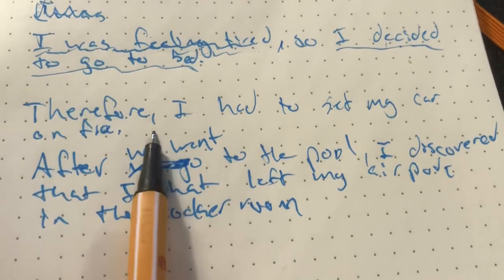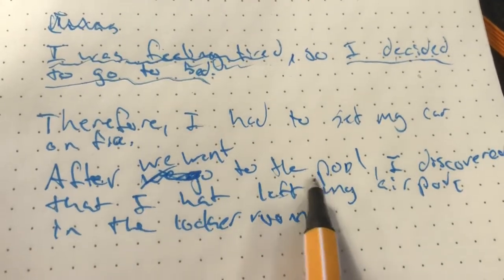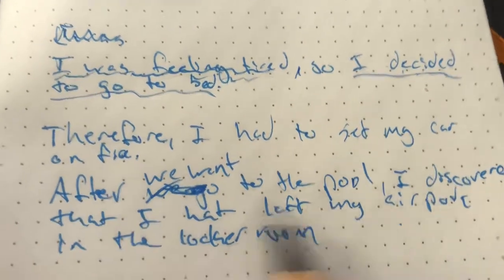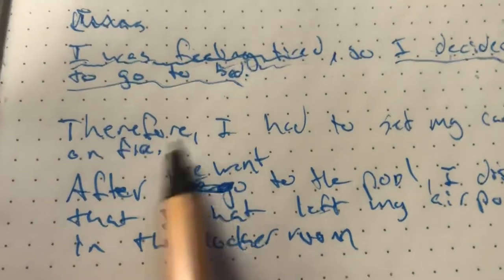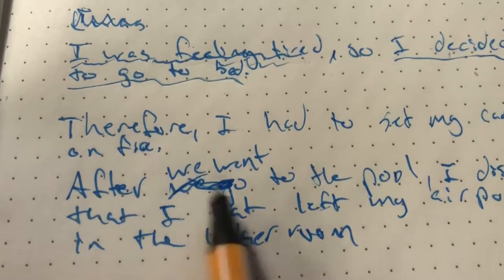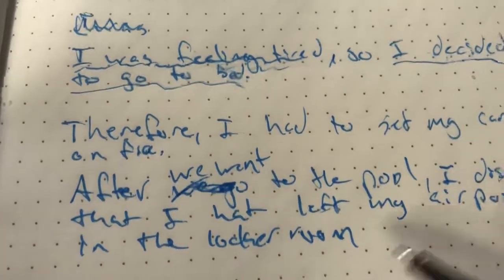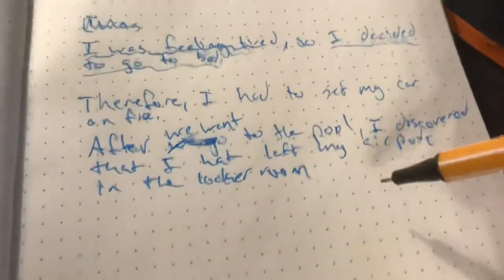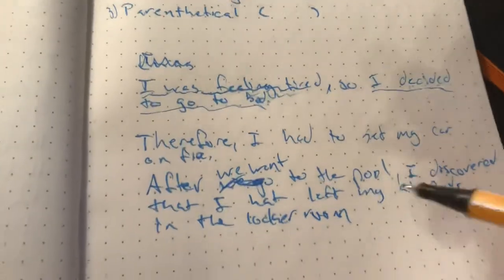Again, sorry for the handwriting. But, you see, after we went to the pool, that's, again, trying to set up, introduce the rest of the sentence. Therefore, we're kind of introducing the rest of the sentence after we went to the pool. Comma. Both of these should be separated with a comma, okay? And again, God, looking at my handwriting, it looks just atrocious.